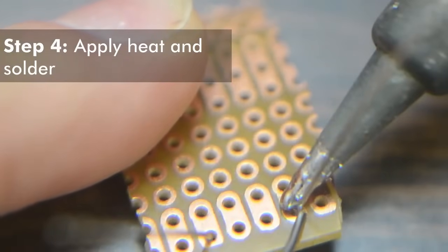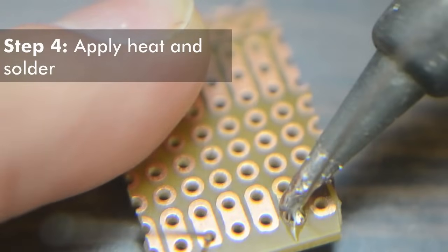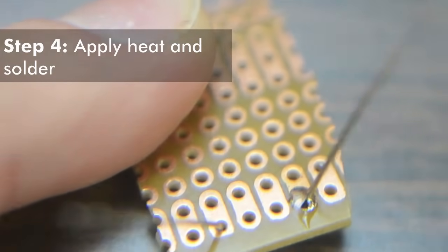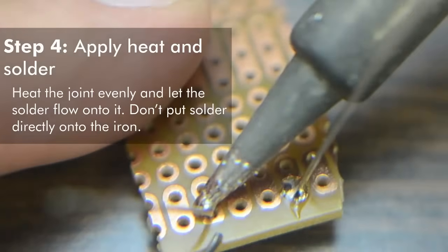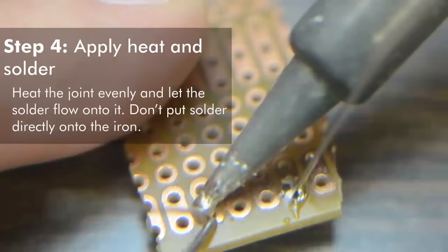Now we're ready to apply solder. The whole principle is to heat up your joint evenly and melt solder onto the joint, not the tip of the iron. Apply the iron to one side of the components that you're trying to join and feed solder from the other side.